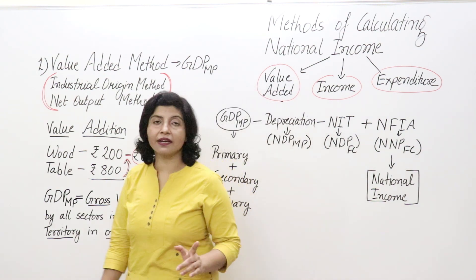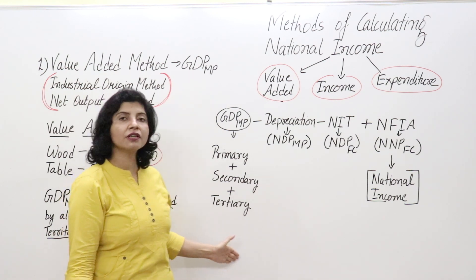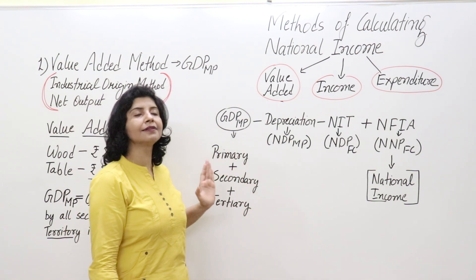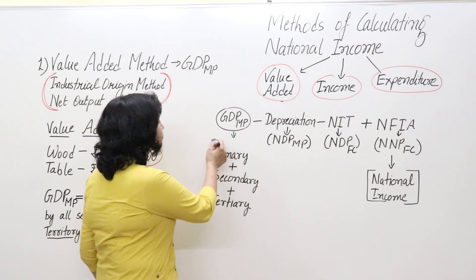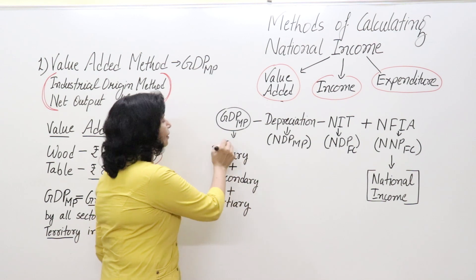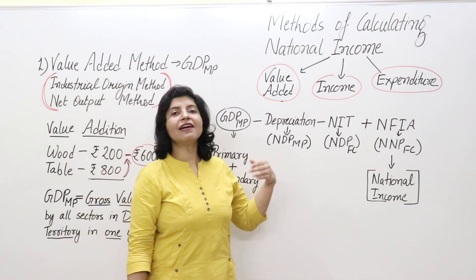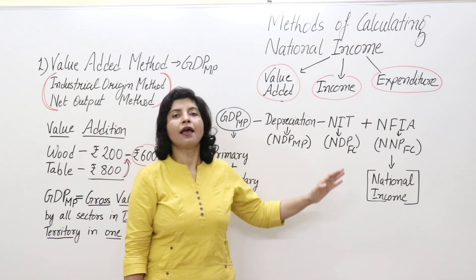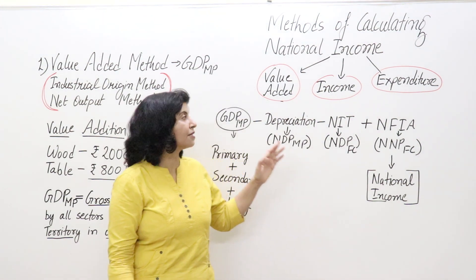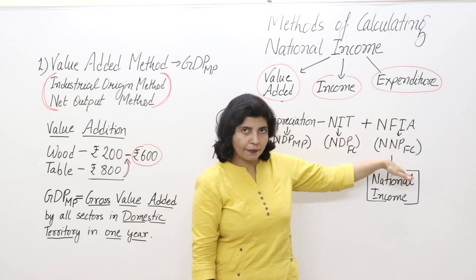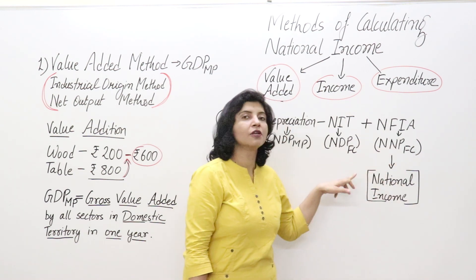GDP at Market Price is the sum total of gross value added by all sectors — primary, secondary, and tertiary — in the economy. But to arrive at national income, we always express it as Net National Product at Factor Cost (NNP FC). We never finally express national income as GDP MP; every time we have to convert it to NNP at factor cost.